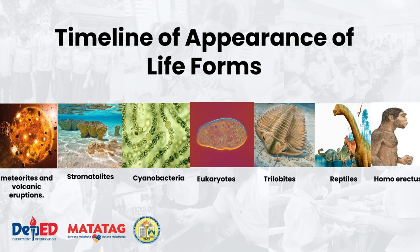I have here a simple timeline of the appearances of life forms on Earth. It all started with meteorites and volcanic eruptions, then came stromatolites, then cyanobacteria, eukaryotes, trilobites, reptiles, and the presence of Homo erectus. This timeline serves as the evolution of life — the story of evolution over three billion years ago — showing how microscopic single-celled organisms transformed the Earth and gave rise to complex organisms like animals. By the way, humans are considered animals — the highest form of animals.